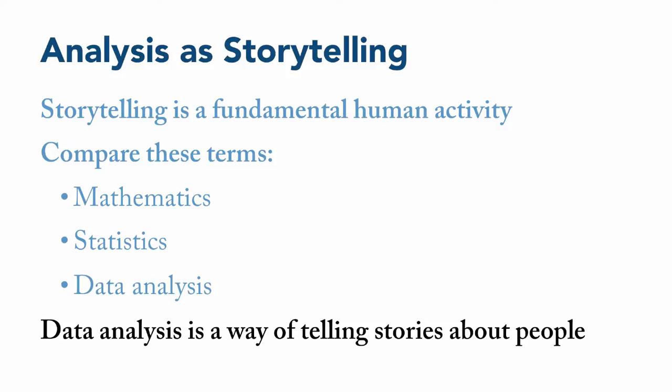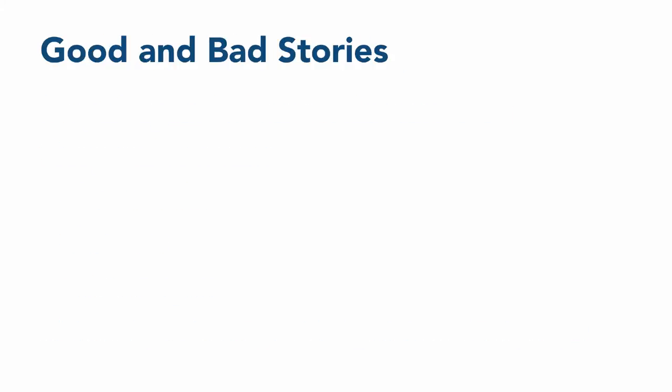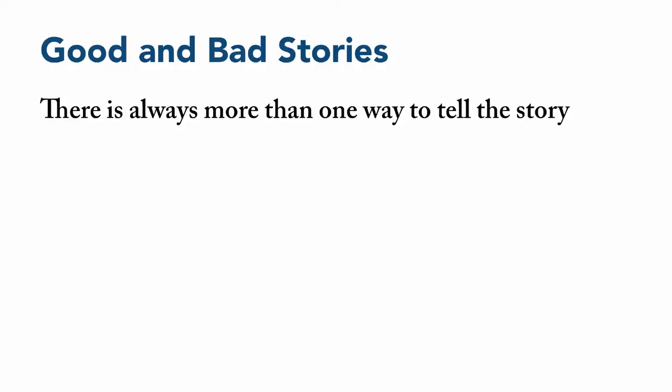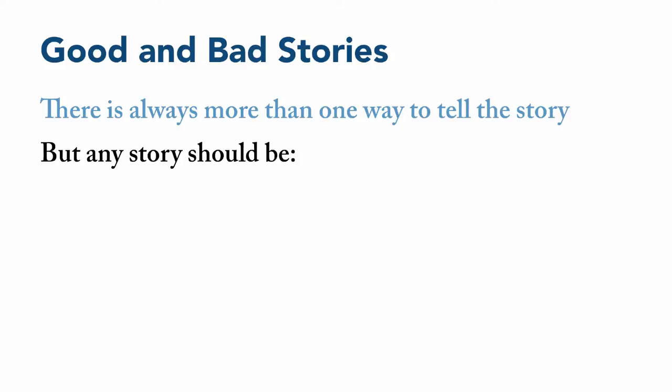Given that there is a connection between data analysis and storytelling, it can also be helpful to remember some of the principles of good storytelling. The first is that there is always more than one way to tell a story. Sometimes the difference is a matter of flavor, as in different productions of Shakespeare's Romeo and Juliet or Mozart's Marriage of Figaro. Sometimes the difference is more substantial, as in stories like Wicked that recast a villain as a hero or vice versa. But in every case, for a story to be believable or persuasive, a few things need to be true.